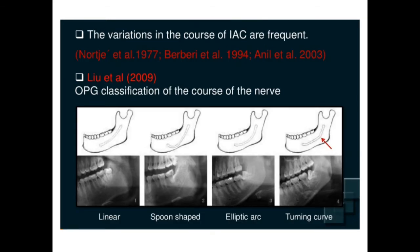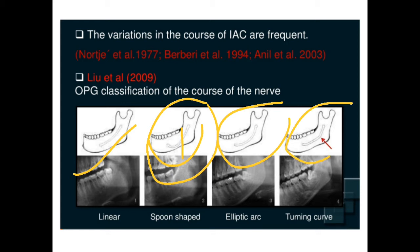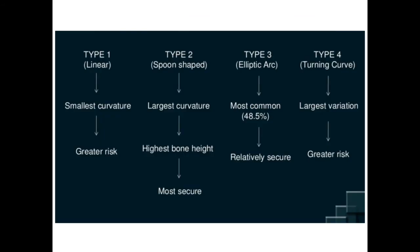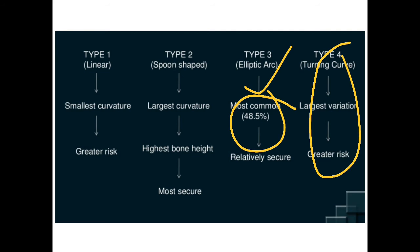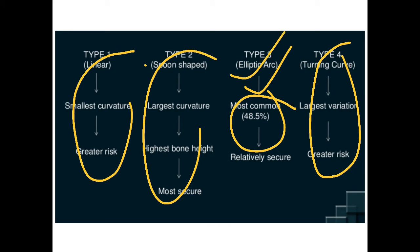These are different situations of inferior alveolar nerve curvature. We can have a linear type, a spoon shape, an elliptical one, or a turning curve. The spoon shape is excellent — you can have a good implant height. The turning curve is very close to the crestal bone and is the most dangerous situation. The most common is elliptical, which is relatively secure. Around 40-50% of cases will be elliptical. Spoon shape is the most secure; linear and turning curves carry greater risk.